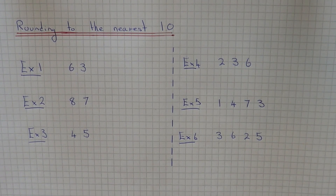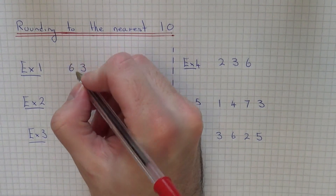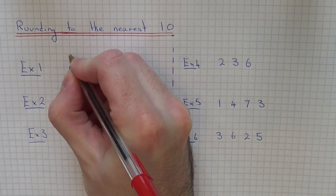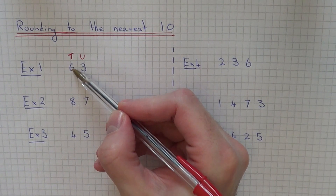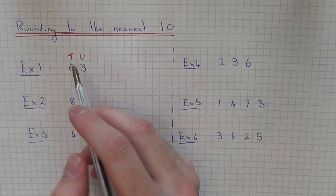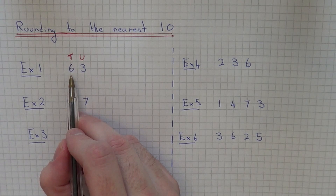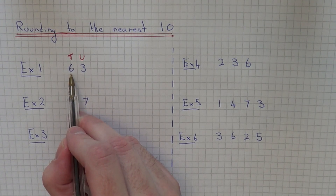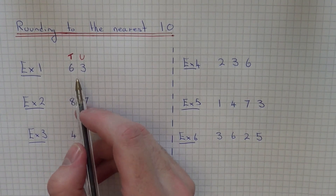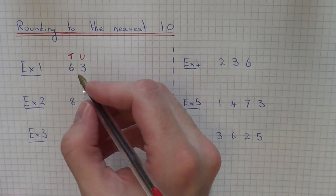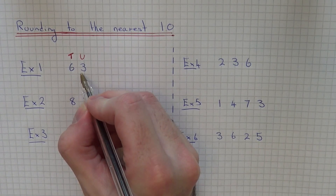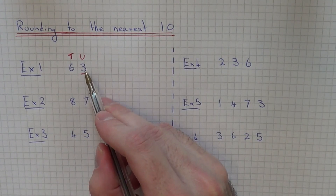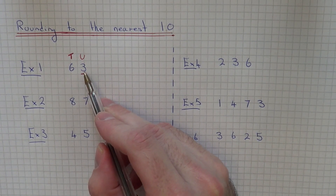Let's have a look at example one. We've got round sixty-three to the nearest ten. To do this, first of all look at the tens column. We have six tens, so we've got two possible answers — it'll either be closest to sixty or seventy. To decide which one it's closest to, you will need to look at the number in the units column. If this number is below five, you're going to round the number down, so it's closest to sixty.